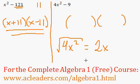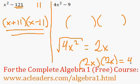So that'll be just 2x, since 2x times 2x will be 4x squared. So I'll put a 2x here and another 2x over here.